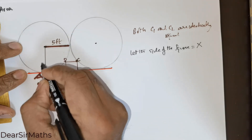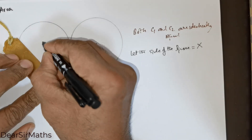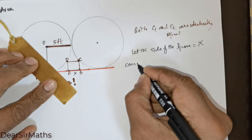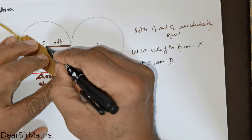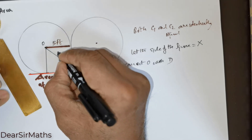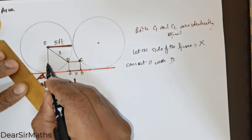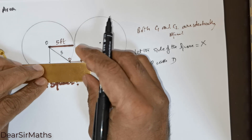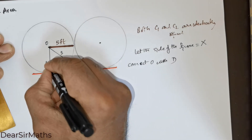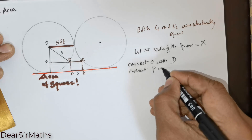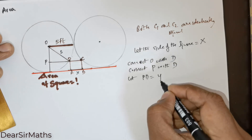This entire length is going to be 5 units. Now I will connect — let me take this center as O. We will connect O with D, and that distance is going to be 5 units. Then I will take a point P and connect D with P. Let PD be equal to Y units.